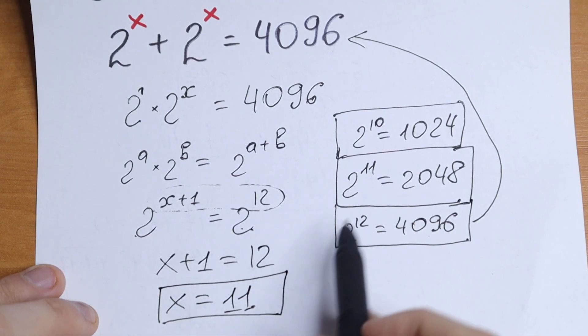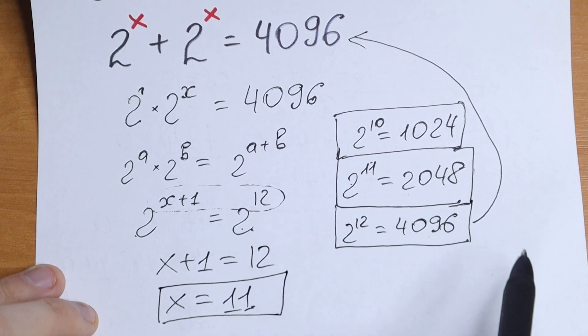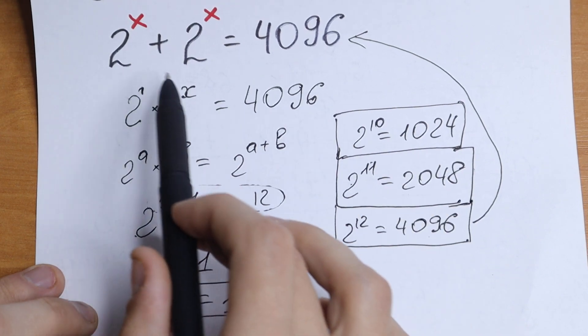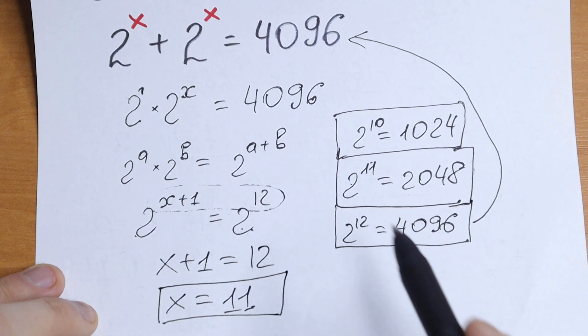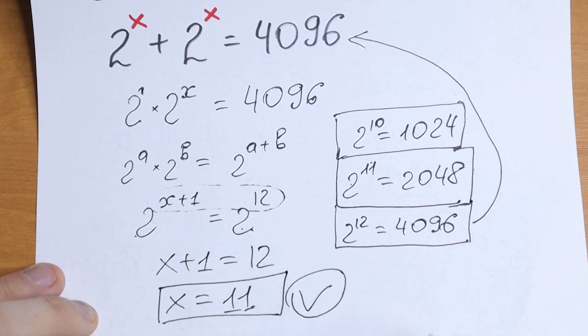And moreover, x equals 11 means we have 2 to the 11th power. We will have 2048, which equals 2048 plus 2048, which equals 4096, which is correct. So this root is good for us.